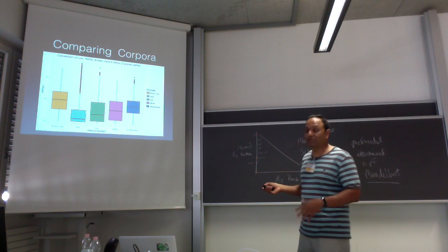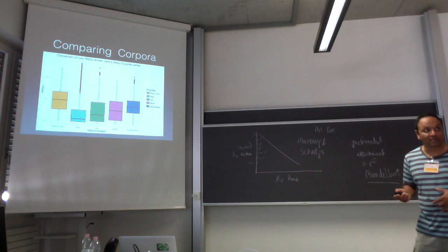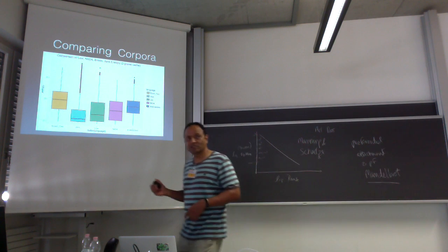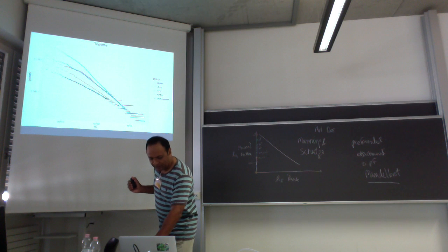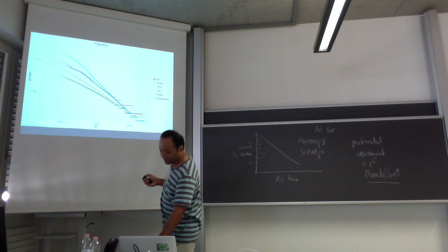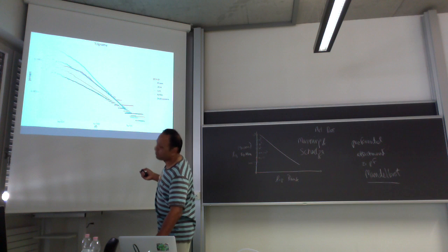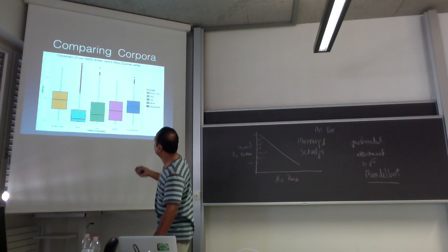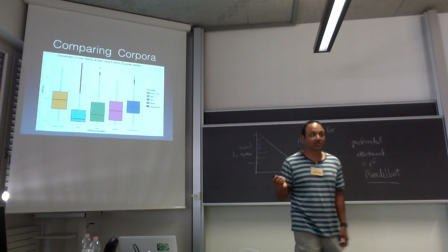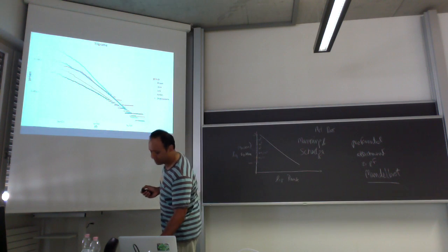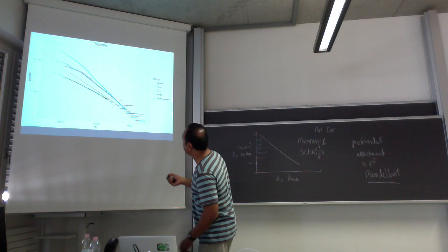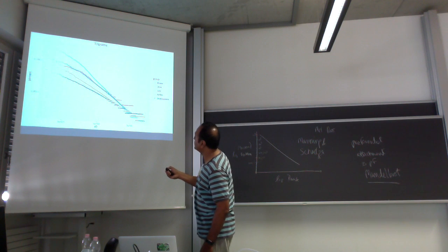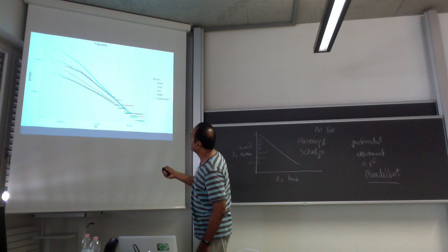Shakespeare and Brown are just general English, and you get much higher information. You can compare the Zipf plots shown earlier for the different corpora with the entropy, and you can see the connection. Java is at the top of the Zipf plot, and English, Brown, and Shakespeare are down here, with NASA and the legal corpus in between.